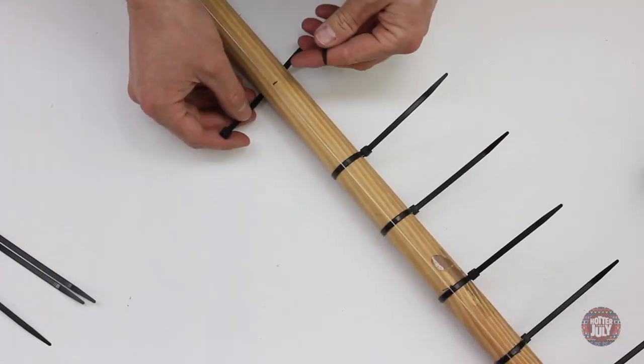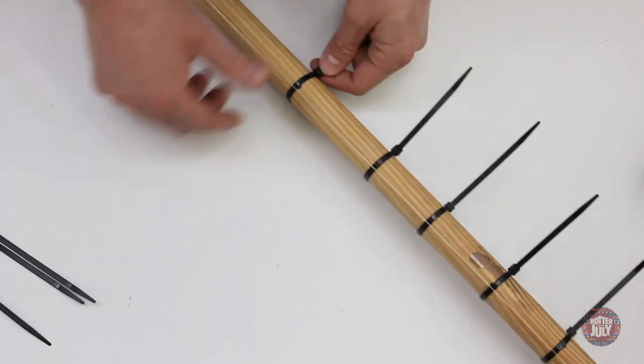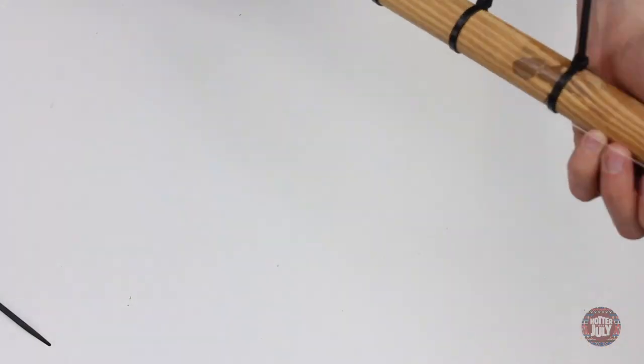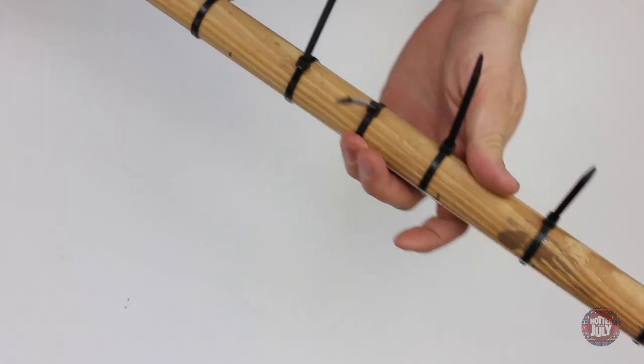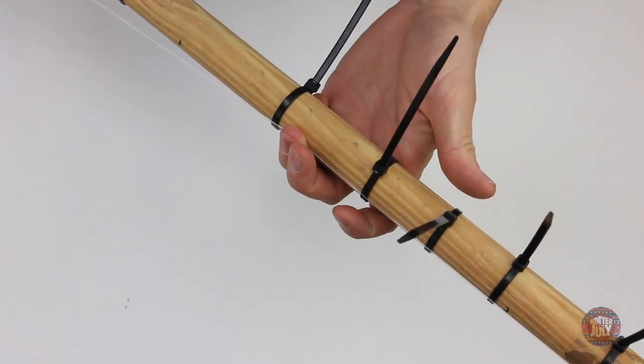To finish the instrument and this video, I've added some cable ties along the length of the neck at positions that give me an approximately musical scale. Good luck with your instrument building and be sure to check out my percussion video made for Hotter Than July.